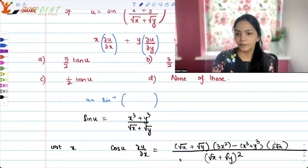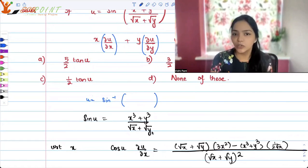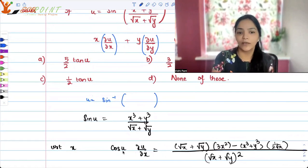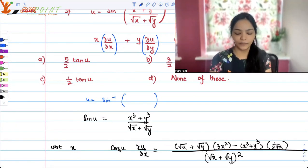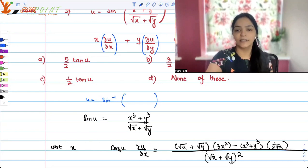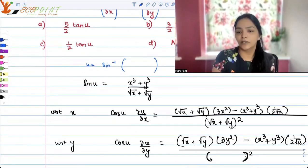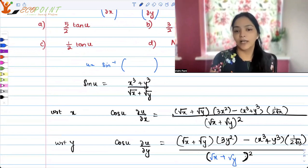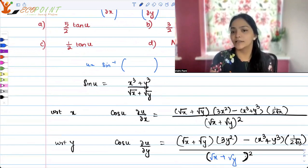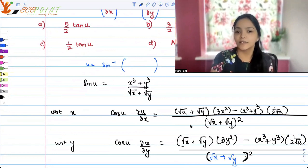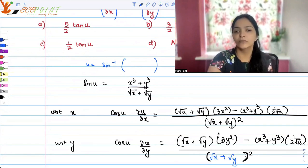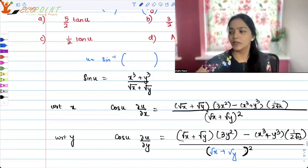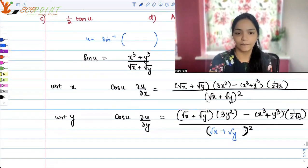Differentiating with respect to x using the quotient rule gives cos u · ∂u/∂x on the left. The right-hand side becomes (√x + √y) · 3x² minus (x³ + y³) · 1/(2√x), all over (√x + √y)². By symmetry, you can find the derivative with respect to y similarly.